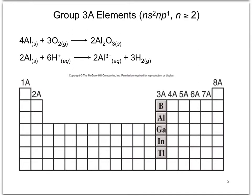Group 3A metals react with oxygen to form metal oxides. They also react with acids to form plus-three ions and hydrogen.